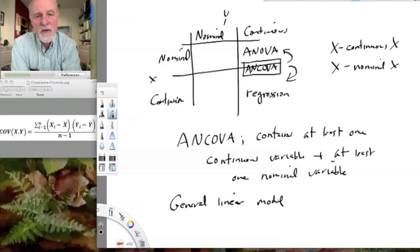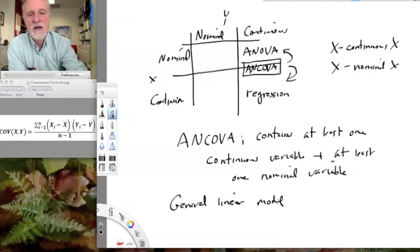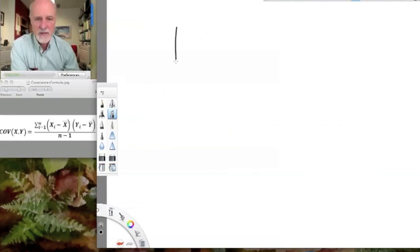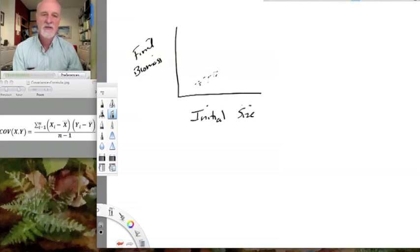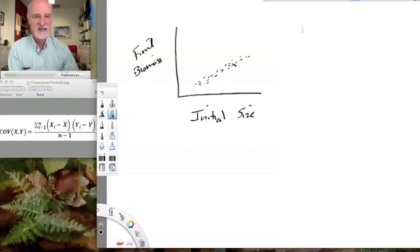I want to talk about now the first and kind of most useful, maybe most used case of analysis of covariance. And that's where we have a factor that's continuous. So let's say we have, for example, initial size of an organism. And we know that affects final biomass because large organisms tend to get larger. So you know you're going to have this kind of relationship between initial size and final size. This is particularly true for plastic organisms like fish, plants, and things like that.